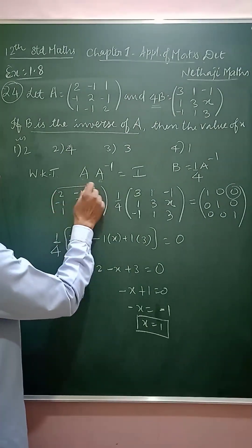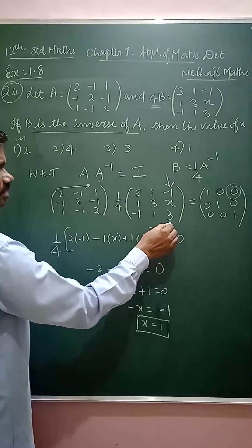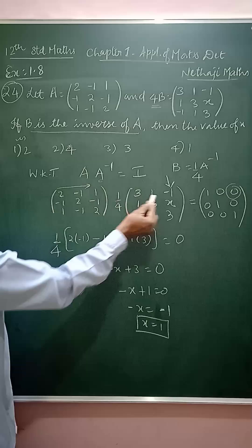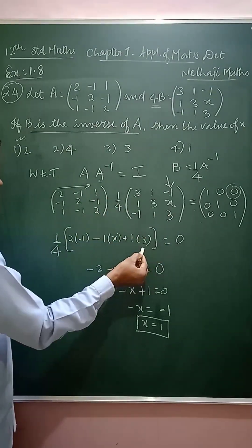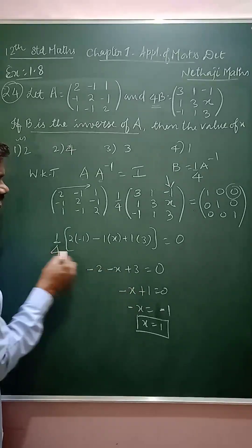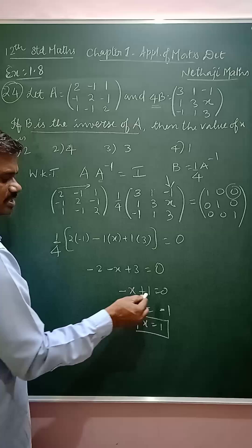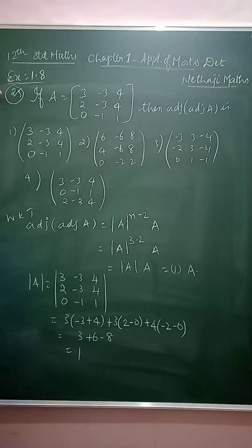This gives the identity matrix. So here the particular element is equal to the x value. I am going to multiply the first row with third column. If you multiply, 1 by 4 times 2 times minus 1 minus x times 1 plus 1 times 3, this gives minus 2 minus x plus 3. Now 1 by 4 again equals 0, so minus x plus 1 equals 0, x equals 1.